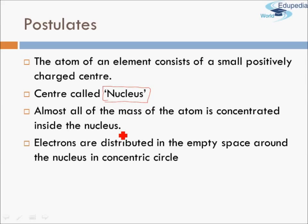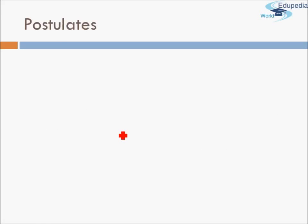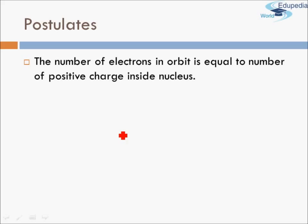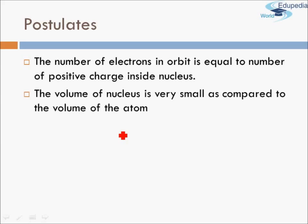So not only is the positive charge concentrated in the nucleus, but most of its mass — in fact almost all of its mass — that is the atomic mass, is mostly attributed to the nucleus, the center part of the atom, and not to the electrons revolving around it. He also said that electrons are distributed in the empty space around the nucleus in concentric circles. The number of electrons in orbit is equal to the number of positive charges.